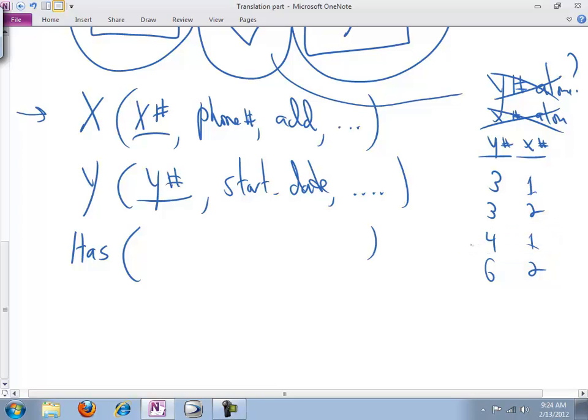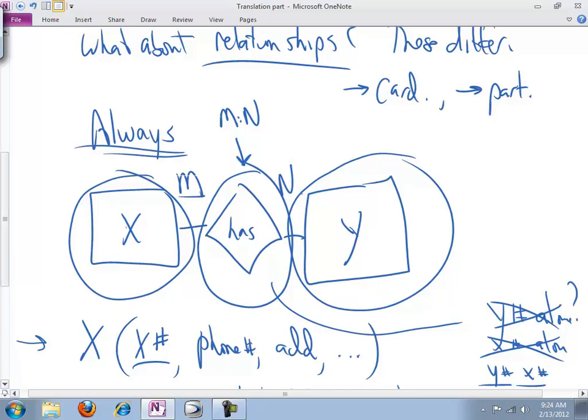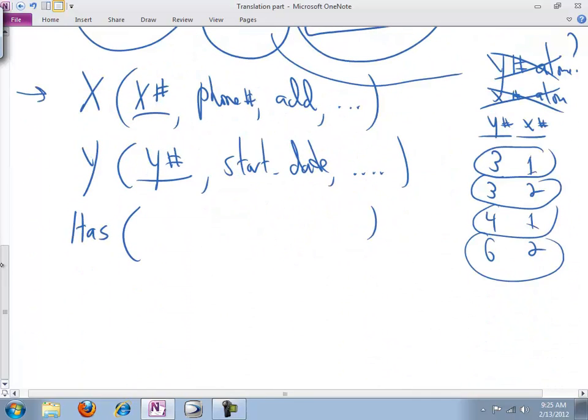We cannot use just Y for the primary key, and we cannot use just X for the primary key. If we use the two of them together, however, three and one, that's unique from three and two, from four and one, and from six and two. So what we're saying here is because this is a many-to-many relationship, we need both sides' primary keys to assure uniqueness within the relationship table. X number and Y number put together will be the primary key.